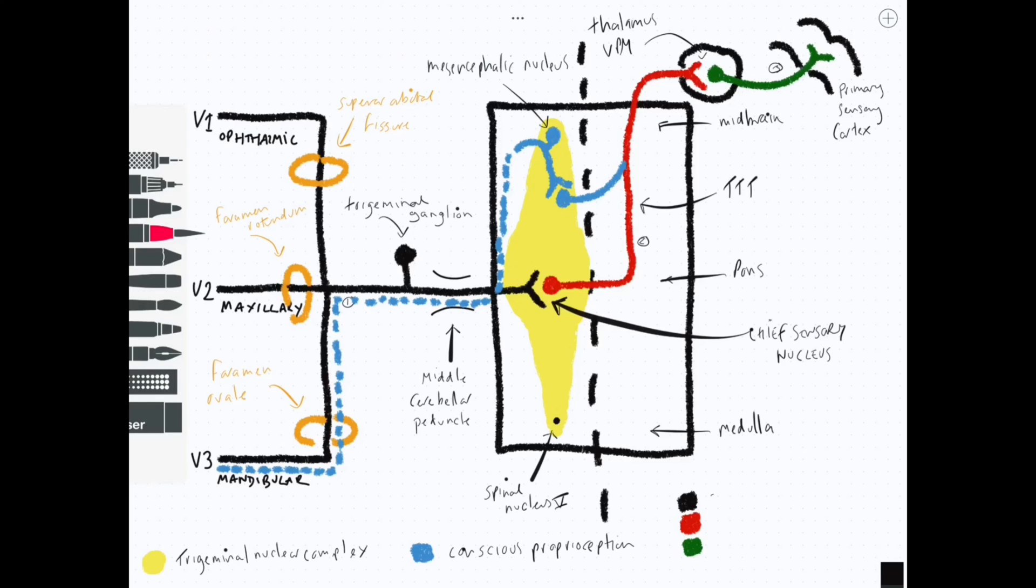So it's worth remembering that this blue tract here is carrying proprioceptive information. We've got the mesencephalic nucleus, which is the same as the trigeminal ganglion in the sense that it is a pseudounipolar cell body, but instead of being outside the central nervous system, it's inside the central nervous system.